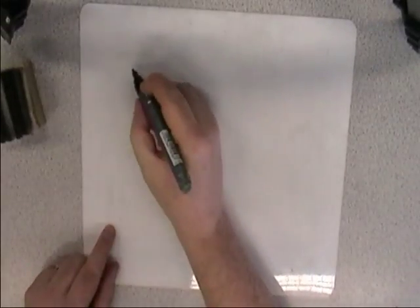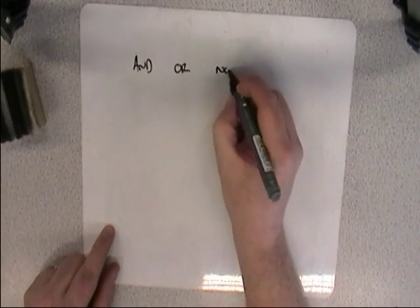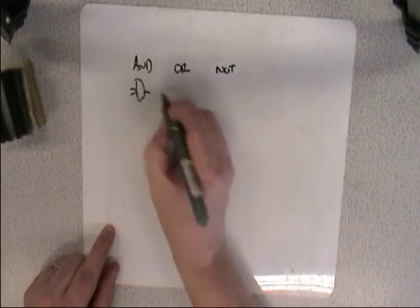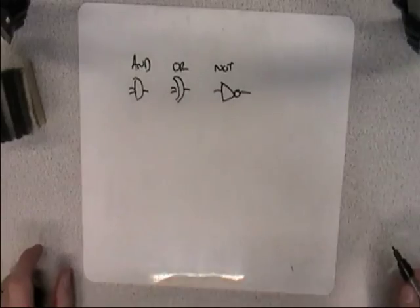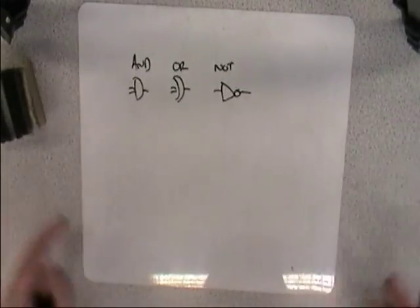Last time we looked at AND, OR, and NOT, which look, if you remember, like this. My drawings are rubbish, if you've just discovered that, it's tough. AND, OR, and NOT, they're the three basic gates.